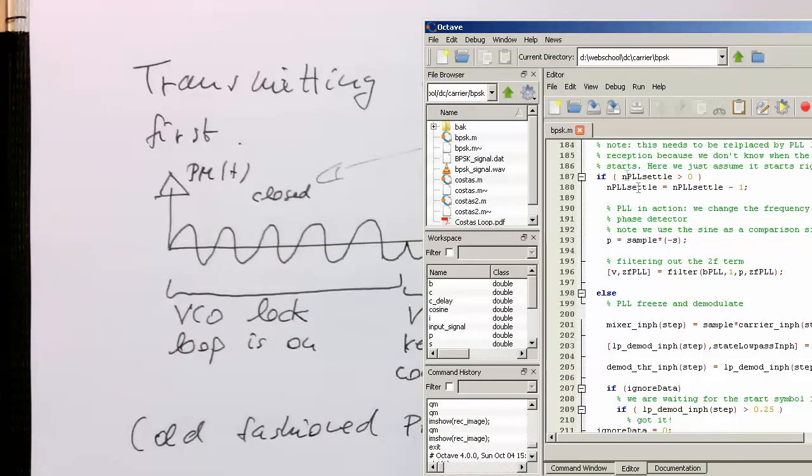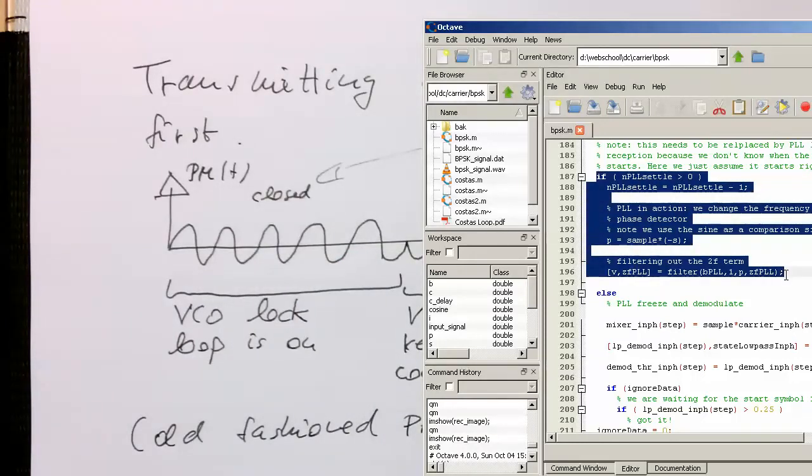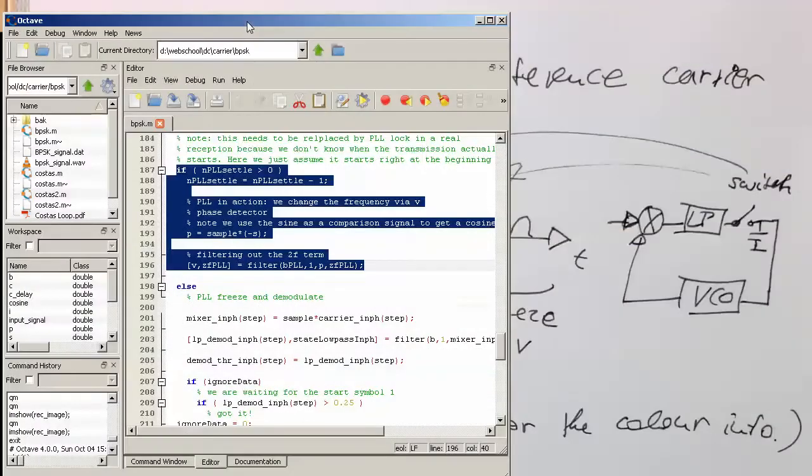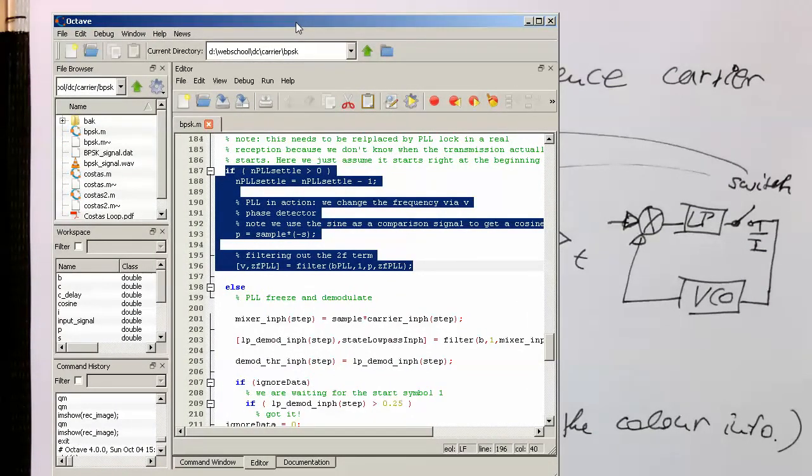In this period here, we have basically this code bit running here. So the PLL is active. So we've got here first our phase information P, and then this is filtered here. So if I just label this here, in this period here, the switch is closed.